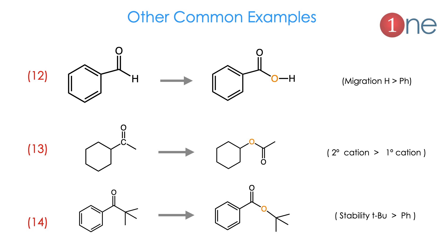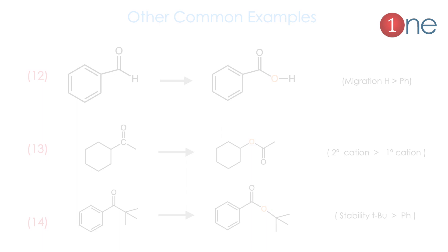Example 14: competition between a phenyl group and a tertiary butyl group — which migrates? According to migratory aptitude, the tertiary butyl group is much better than phenyl, so oxygen is inserted between the tertiary butyl group and the carbonyl group.